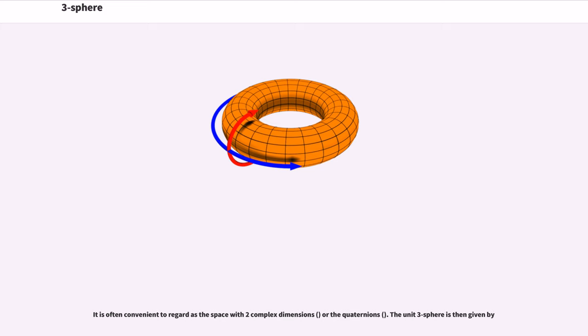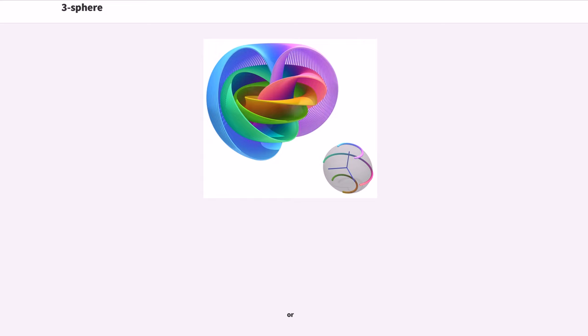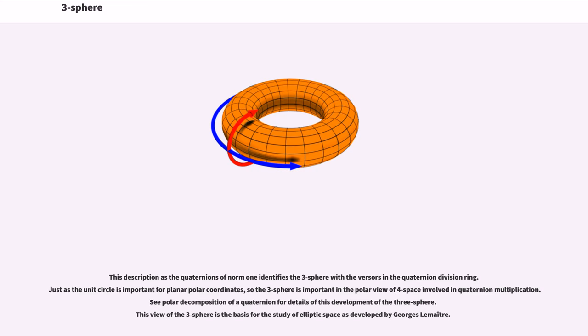It is often convenient to regard as the space with two complex dimensions. The unit three-sphere is then given by. This description as the quaternions of norm 1 identifies the three-sphere with the versors in the quaternion division ring.